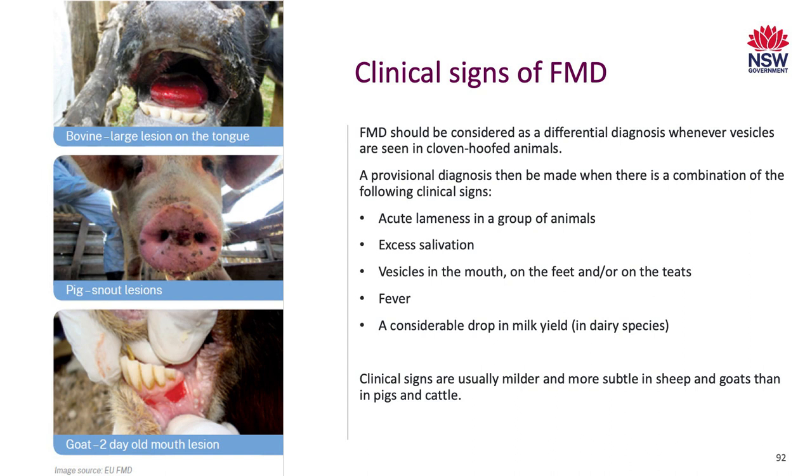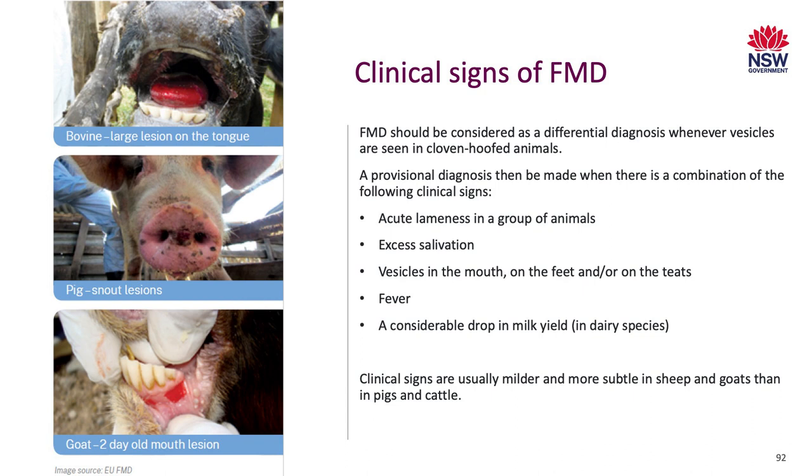A provisional diagnosis should be made if there's a combination of the following signs: acute lameness in a group of animals — particularly in sheep, lameness needs to be reported to district vets, both for FMD and for virulent foot rot, which is a regulated disease in New South Wales — excess salivation, vesicles in the mouth, on the feet or on the teats, fever, and a drop in milk yield. Morbidity of foot and mouth disease often reaches 100%, while mortality is quite low, except in younger stock.